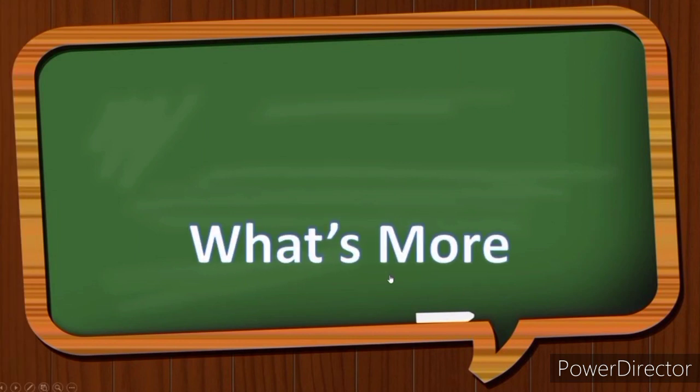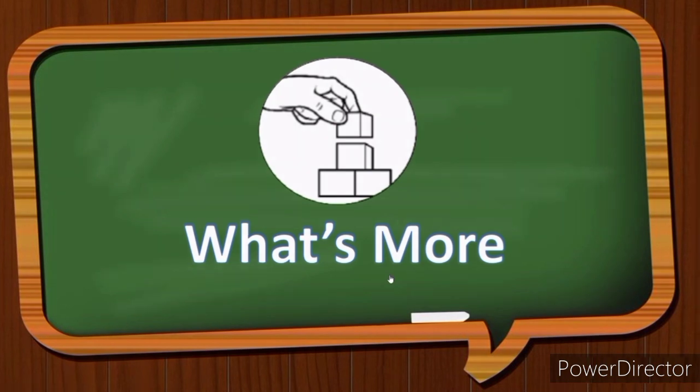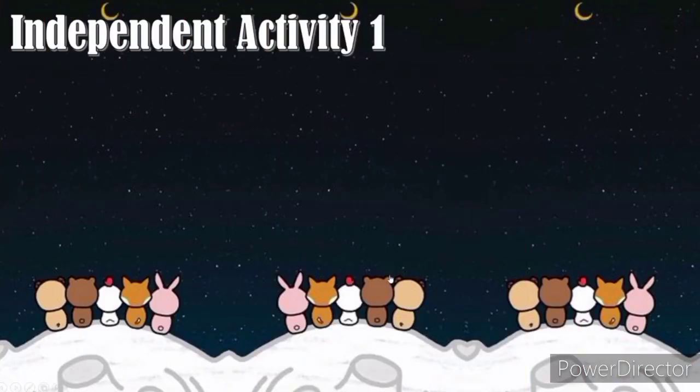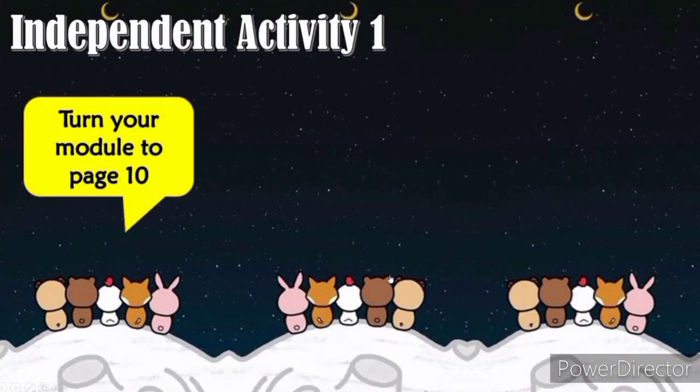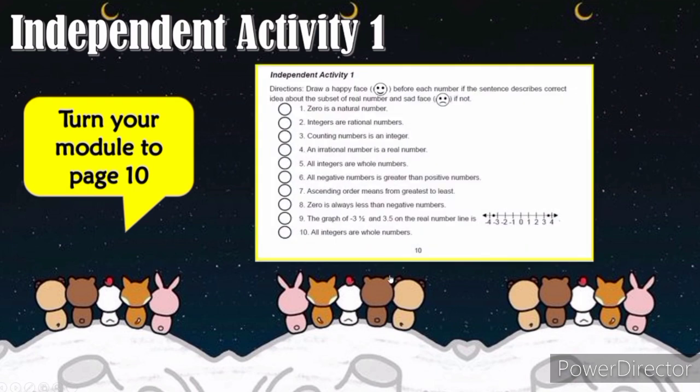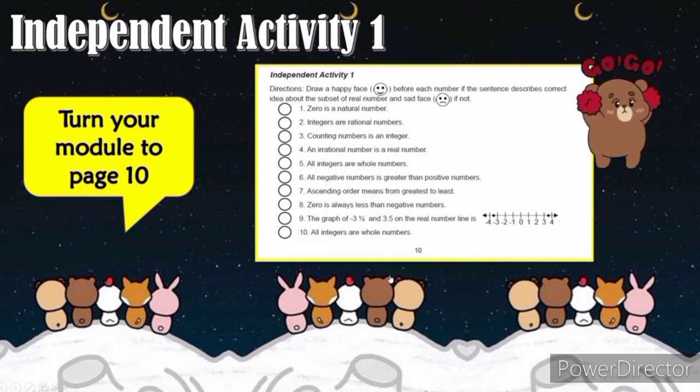What's more? Independent activity number 1. Now turn your module to page 10-11. Draw a happy face before each number if the sentence described correct ideas about a subset of real numbers and sad face if not.